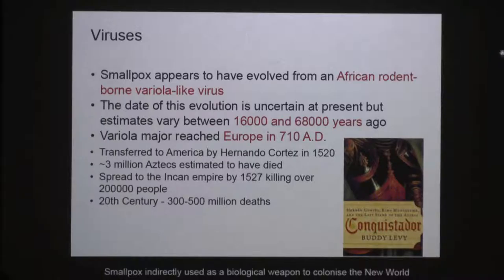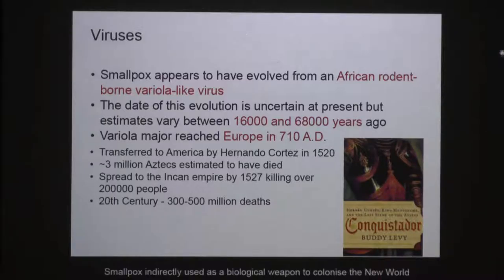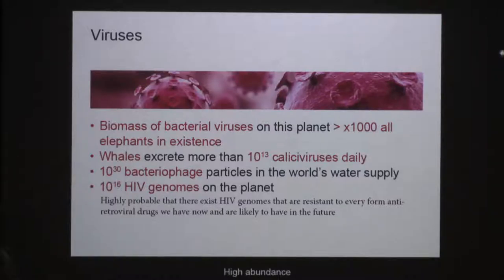Moving on, variola virus moved out of Africa into Europe around 700 AD. Then with colonization, without Cortés even knowing it, he had a biological weapon — a viral pathogen — that he came with, and we actually colonized the Americas indirectly without knowing we were using that pathogen. Viruses have played along with us, they've been in our lives. They are entities that infect an organism, and wherever there is an organism, inevitably there will be a virus.